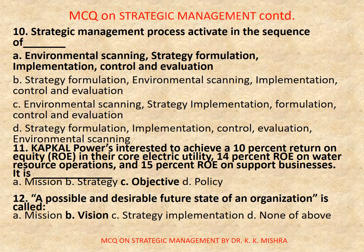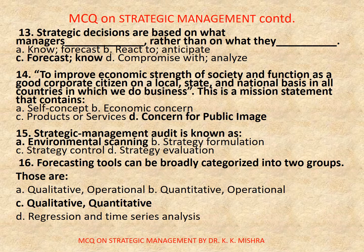Question 12: A possible and desirable future state of an organization is called — A, mission; B, vision; C, strategy implementation; D, none of the above. Correct option is B: vision.